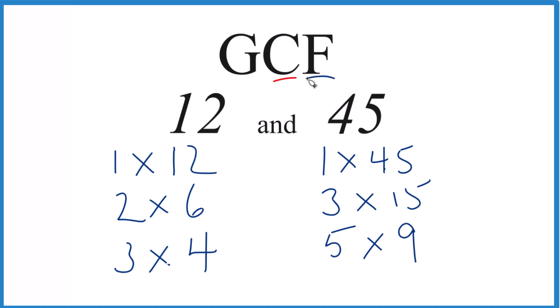So we have the factors, let's see what's in common. Well, 1, 1 goes into 12 and 45, 3, 3 goes into 12 and 45, but it looks like 3, that's the greatest common factor.